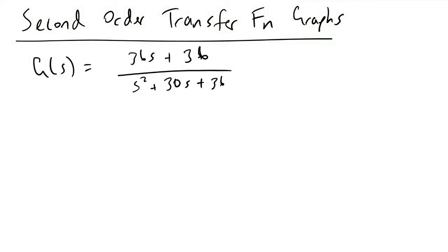An important concept in control classes is how we can understand and predict what kind of response graph we will get from a second order transfer function just by looking at it. In this example, I will go through how we can look at a given transfer function g(s) and derive the expected behavior from it.